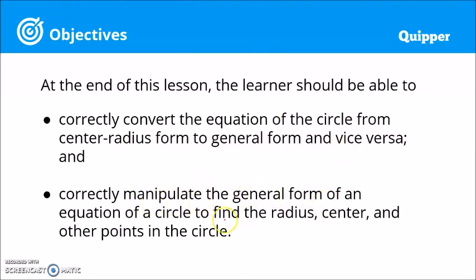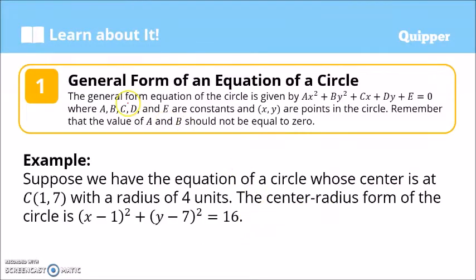And correctly manipulate the general form of an equation of a circle to find the radius, center, and other points in the circle. The general form of an equation of the circle is given by ax² + by² + cx + dy + e = 0, where a, b, c, d, and e are constants and x, y are points in the circle. Remember that the values of a and b should not be equal to 0.